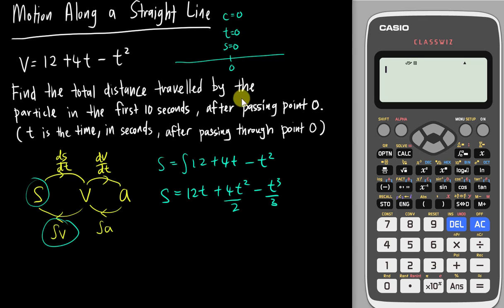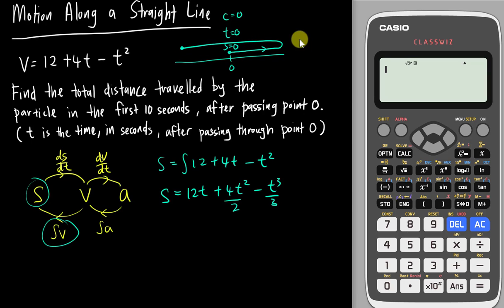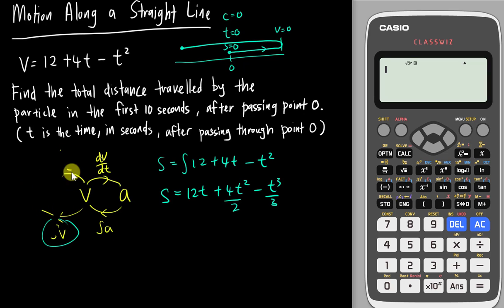To find the total distance in the first 10 seconds, you first need to check whether the particle makes a U-turn, because the particle might not travel in only one direction — it might turn around at some point. Whenever a particle makes a U-turn it stops momentarily, so we set v equals zero to find when the U-turn occurs.